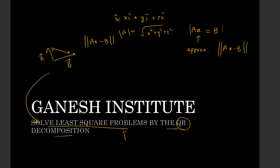The general form of QR decomposition is A = QR. Just like we have Ax = b and need to find x, here the formula becomes Rx = Q^T b, where x is a vector. R is an upper triangular matrix and Q is formed of orthonormal column vectors. I have already explained QR decomposition in detail, but let's also go through an example here of how we can solve this problem.